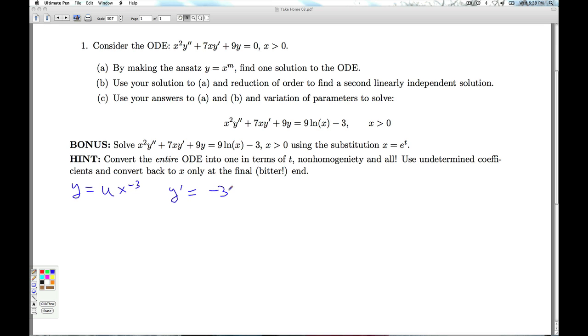And if you go through the product rules here, you get y prime equals negative 4x to the minus 4th u plus x to the minus 3rd u prime. And then your y double prime will be 12x to the minus 5th u minus 6x to the minus 4th u prime plus x to the minus 3rd u double prime.